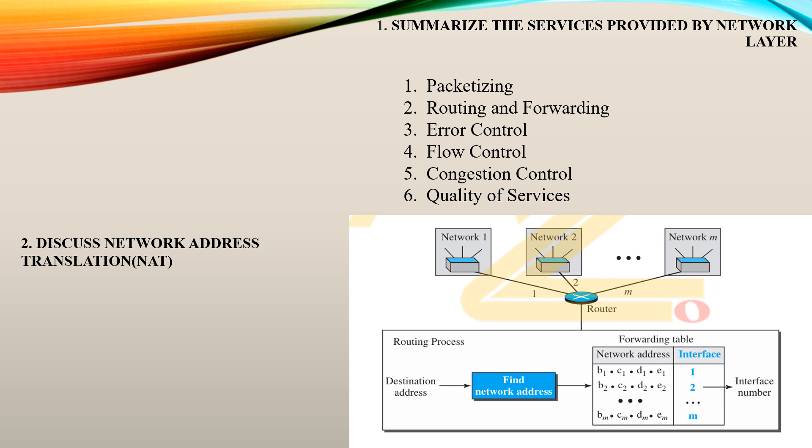Moving on to the second question: discuss Network Address Translation, which we call NAT. NAT is the process of translating a private address to a public address through a router or internet link. These are the private LANs — network 1 to network M — each having a private address. They are routed to search for the destination public address. A forwarding table records from which network address it has been routed, through which interface or port number, to access the external server.